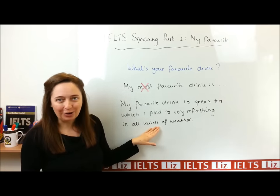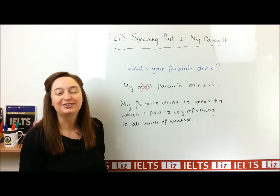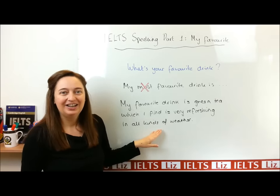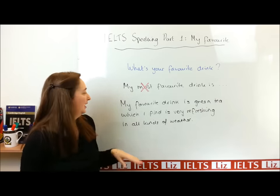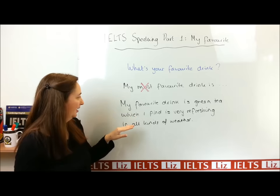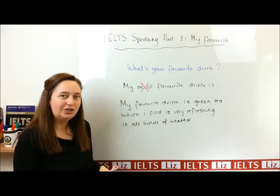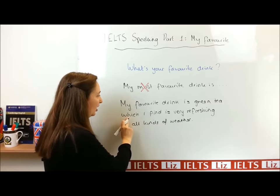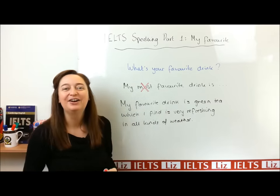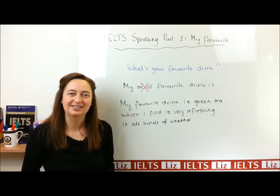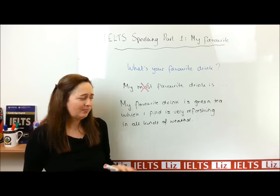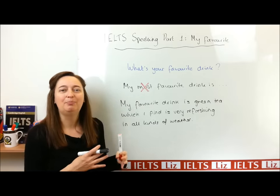I've given a reason that I like it — it's refreshing — and I've explained that I like it in all kinds of weather, whether it's hot, cold, or chilly. Now, if you don't feel comfortable using a clause like 'which I find is,' you could change that and say 'because it is very refreshing.' That's still very good — it's still a complex sentence. Remember: don't use language that you're not comfortable with. If you're comfortable with the clause, great. If not, say 'because.'